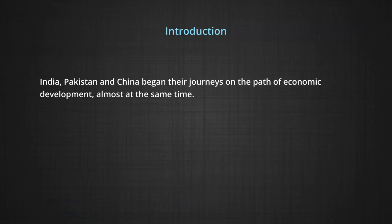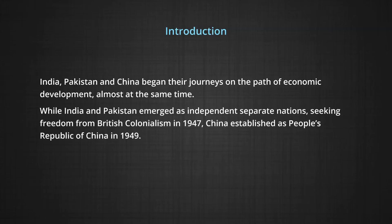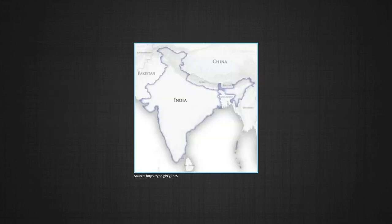These nations are divided by geographical boundaries, though they have cultural similarities. India, Pakistan and China began their journeys on the path of economic development almost at the same time. While India and Pakistan emerged as independent nations seeking freedom from British colonialism in 1947, China established as People's Republic of China in 1949. This module studies the process of development in India and its experiences in comparison with its close neighbors, China and Pakistan.